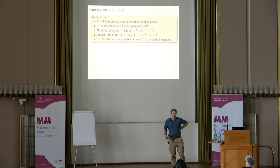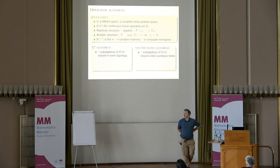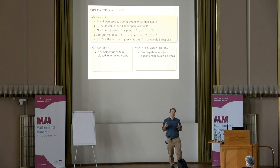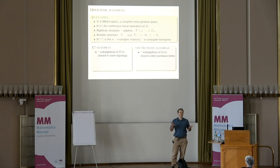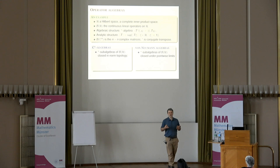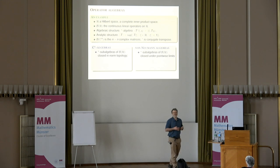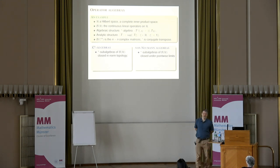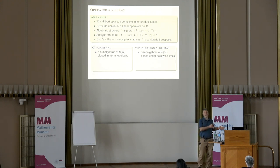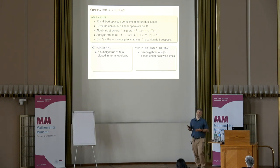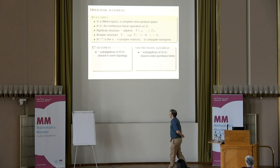I'm interested in operator algebras, and I want to define them as substructures — so I take this B(H) and consider subalgebras of it. It's a bit of a fib, like introducing a group by saying a group is a subgroup of a permutation group: true, but not very insightful. An operator algebra is a subalgebra of this canonical example, but underlying this is an abstract characterization — it's a theorem that operator algebras have enough representations that I can do what I've described.